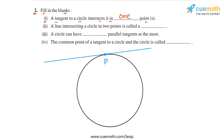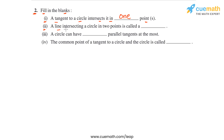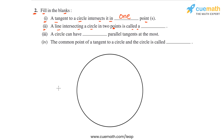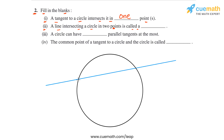Statement two says a line intersecting a circle in two points is called a blank. If a line just touches the circle it is a tangent, but if it intersects the circle in two points A and B, it is called a secant — a secant of the circle. So secant is the answer for part two.